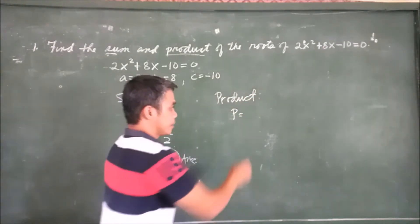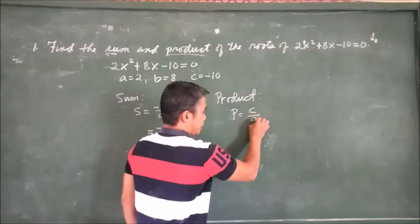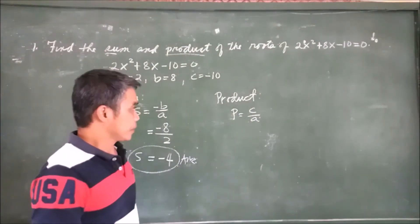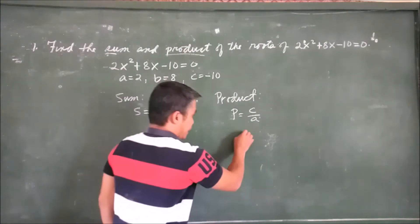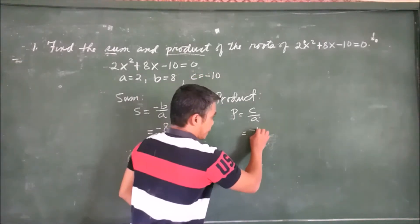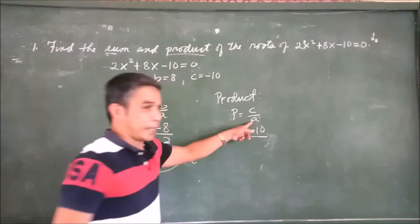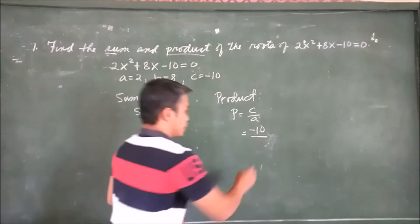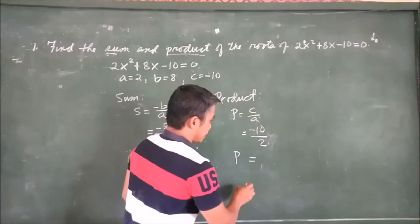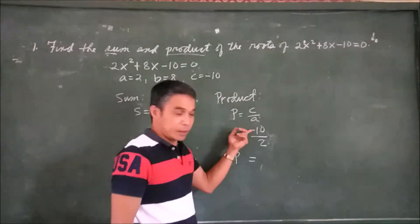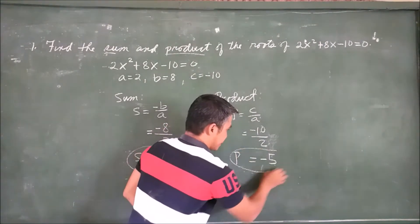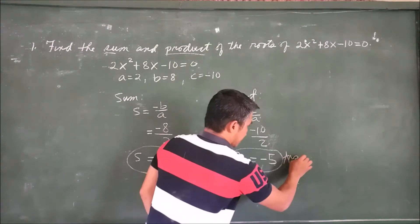For the product, P equals c over a. Substituting our values: c is negative 10 and a is 2. Therefore the product equals negative 10 divided by 2, which equals negative 5. That is our answer.